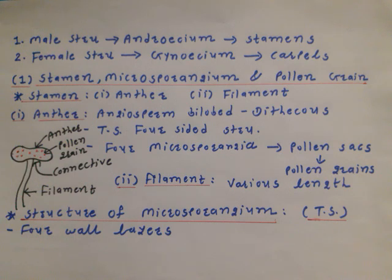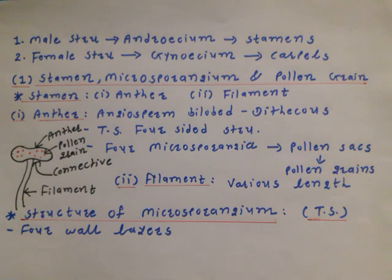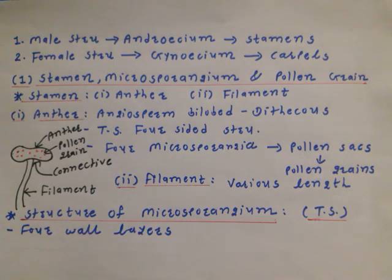The second part of the stamen is the filament. In various plants, the filament is a structure of varying length. Between the anther and filament, a connecting groove structure is observed, known as the connective. So in a stamen, three parts are observed: anther, connective and filament. Within the anther, pollen grains develop at maturity and are liberated for the purpose of pollination.